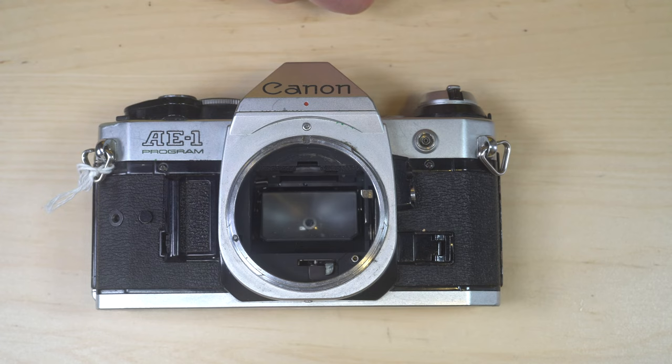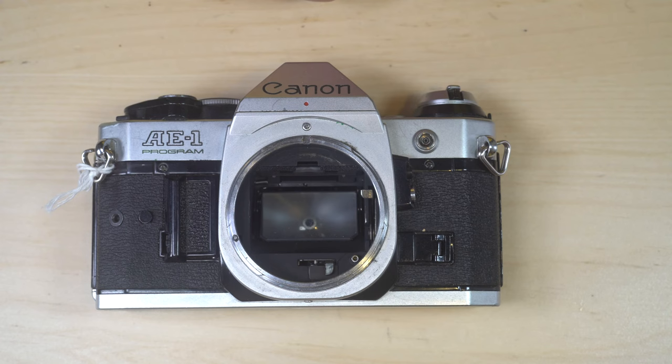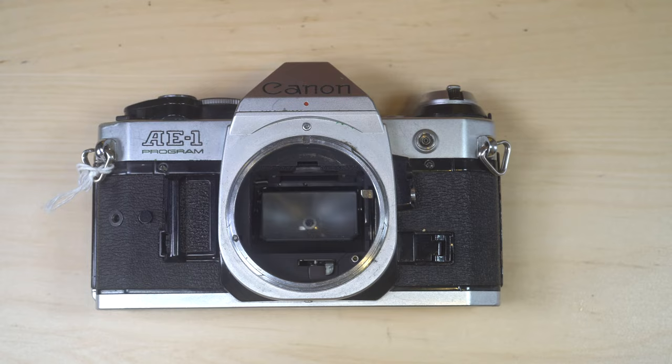However, some cameras like the AE-1 program here have a removable focusing screen. This is a pretty easy one to access because all you have to do is click a switch and the focusing screen is going to drop. Removable focusing screens give you the ability to clean the inside of the screen and the prism as well with pretty good results, and if you have dirt that is trapped in between the screen and the prism, then you can clean it out with this type of screen a little bit more easily. Before we get too much further, let me show you what I mean by some of that.